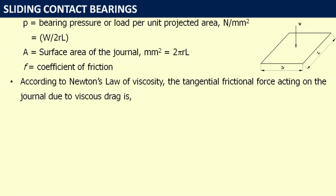According to Newton's law of viscosity, the tangential frictional force acting on the journal due to viscous drag is F = μ·A·(du/dy). Here du is the velocity U (constant) and dy is the distance between the two surfaces in the y-direction, which is the radial clearance C. Therefore, this frictional force equals μ·A·U/C.